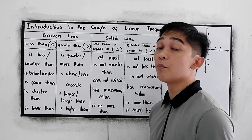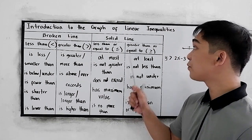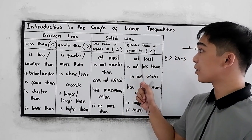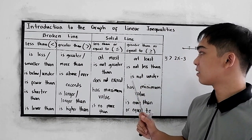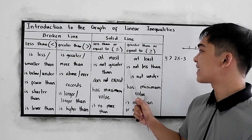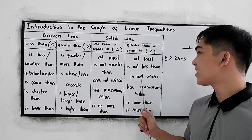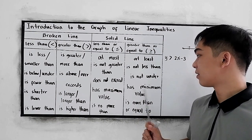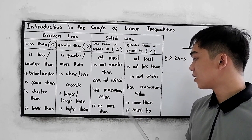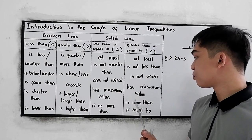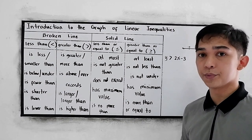Continuing with less than or equal to: is no more than. For the greater than or equal to symbol, we have: at least, is not less than, is not under, has minimum value, is more than or equal to.